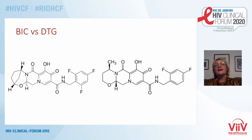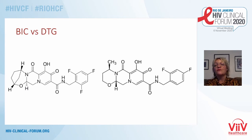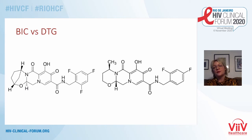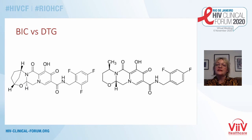That probably should be expected because these two drugs are molecularly very, very similar — bictegravir on the left and dolutegravir on the right. Of course there are some differences; a good example is the impact they have on metformin exposure. They both increase metformin exposure, but dolutegravir to a greater degree. So there are some differences, but it's unlikely there'd be any major differences in safety and tolerability based on their structure.